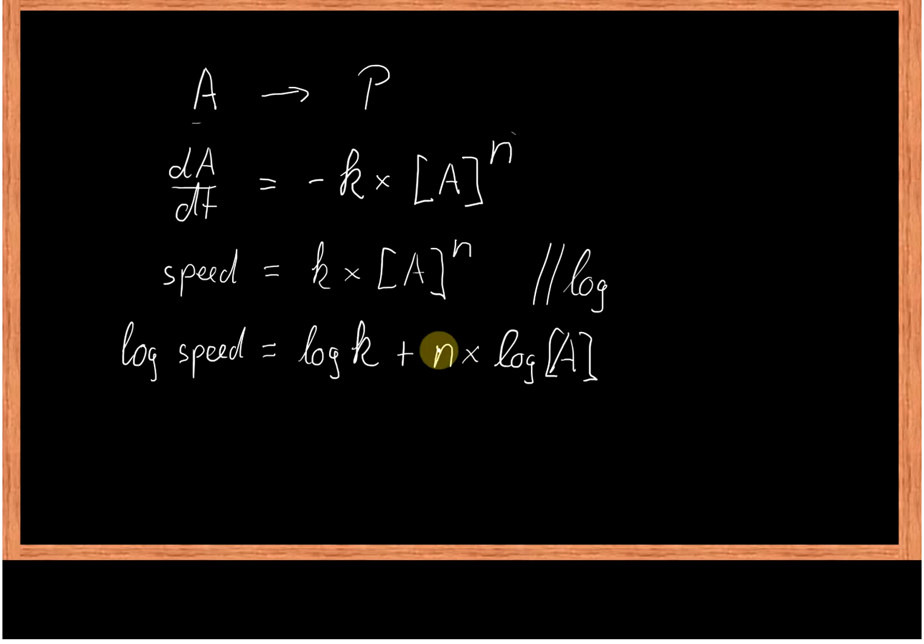And we can write this in a slightly different way. So log speed equals n times log A plus log k. And that is actually the equation for a straight line. So we have y equals mx plus c.